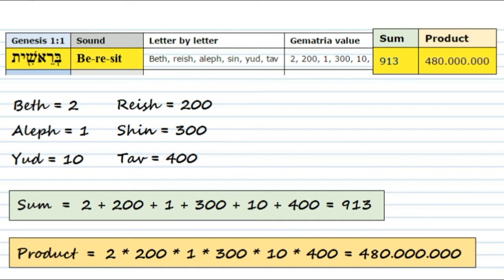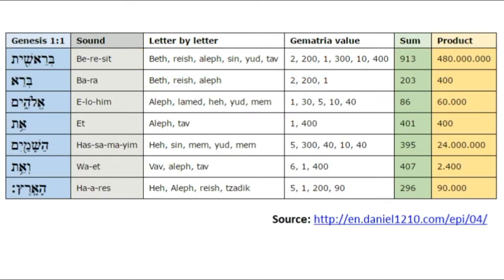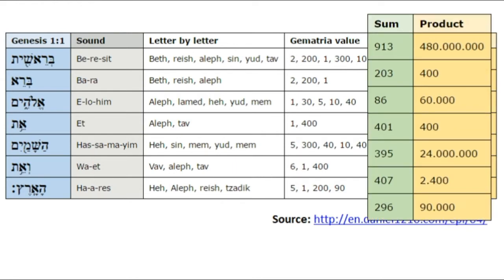In the same way, we proceed with the other 6 words of Genesis 1:1, obtaining 7 sums and 7 products corresponding to the 7 words of the verse. These sums and products are the building blocks we'll use to describe the numerical value of the verse.